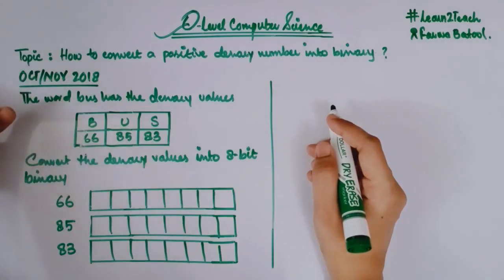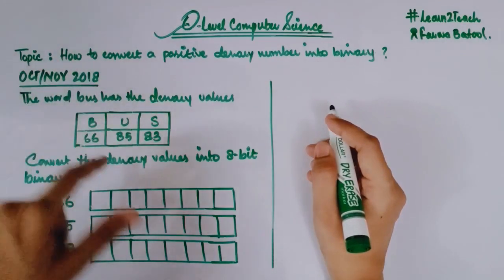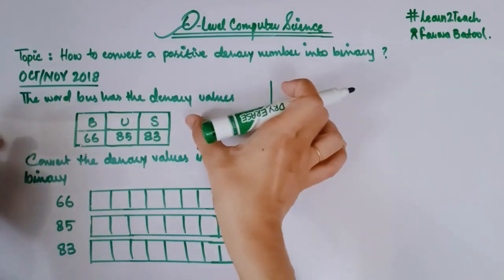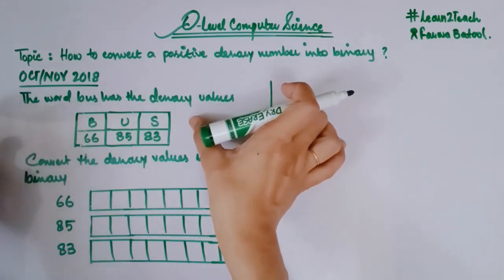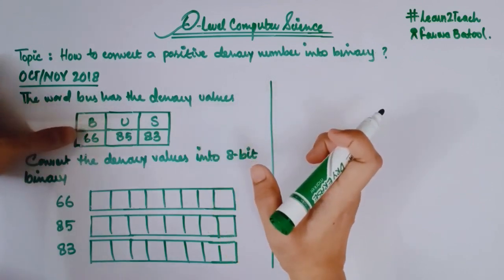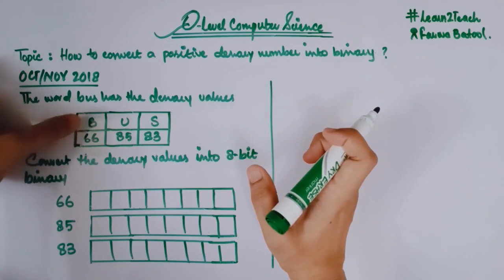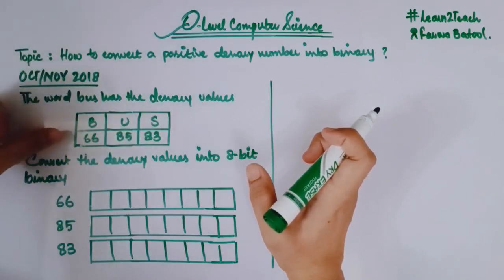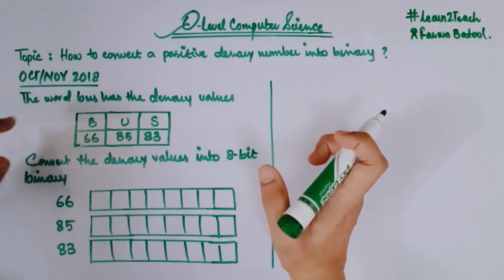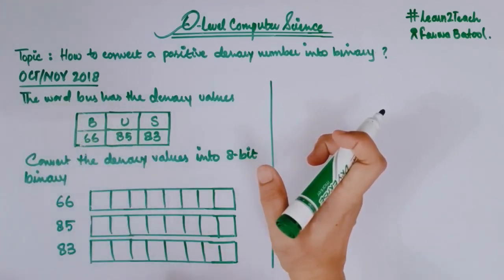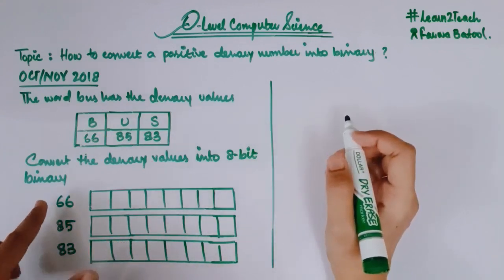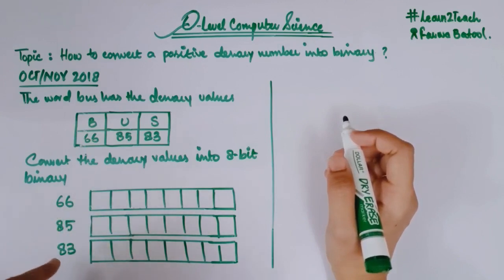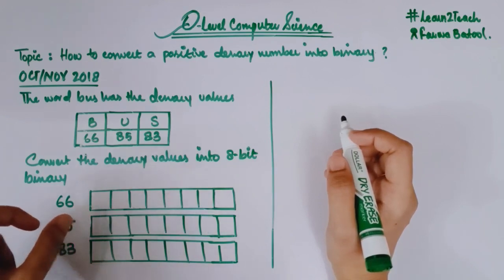The question states: the word BUS has the denary values 66, 85, 83. Convert the denary values into 8-bit binary. We have an ASCII code where each alphabet is converted into a decimal number — B is converted into 66, U stands for 85, and S is for 83. So what we need to do is find the binary value for 66, 85, and 83.